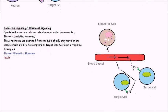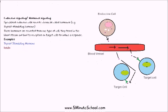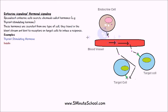The last type is endocrine signaling, or hormonal signaling, where the signal molecule has to travel much further. A specialized endocrine cell releases a signal molecule — in this case called a hormone, for example thyroid stimulating hormone. These hormones are secreted out of the cell, through the tissues, and into a blood vessel.